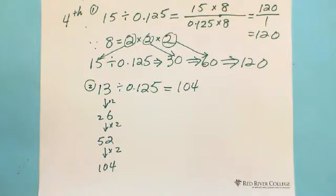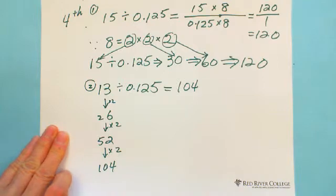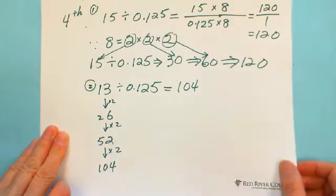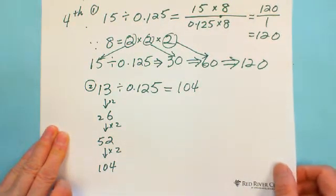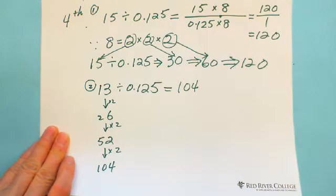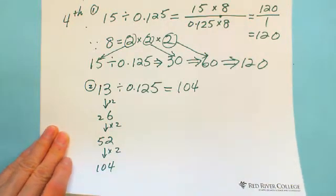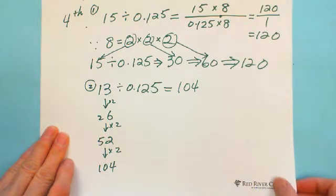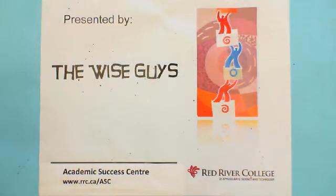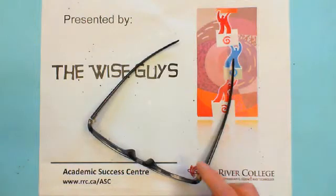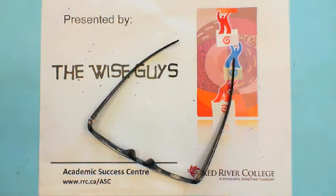And multiplied by 8 — you just call it double three times. This is the second tricks-for-dividing-numbers video. I'm going to make the third video, which is how to divide by 9 easily. This is presented by Wiseguides. Thank you very much.